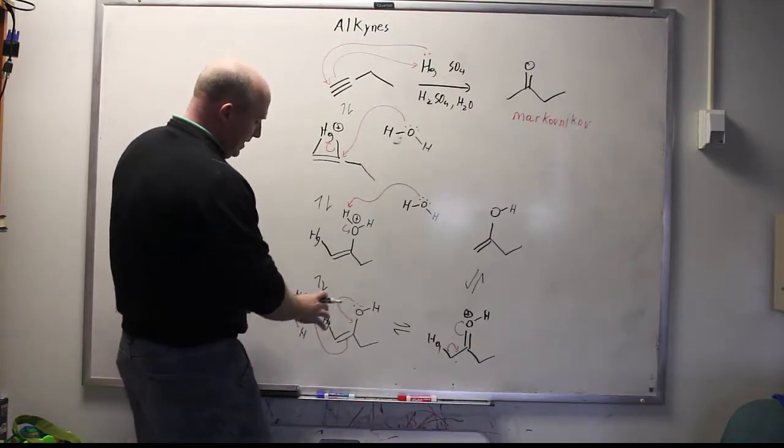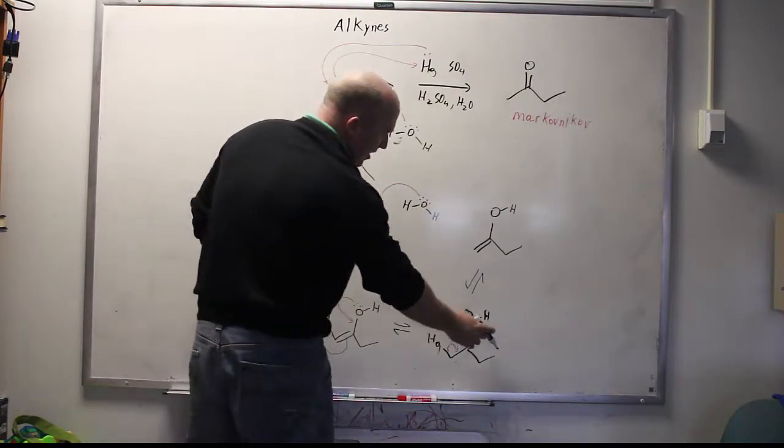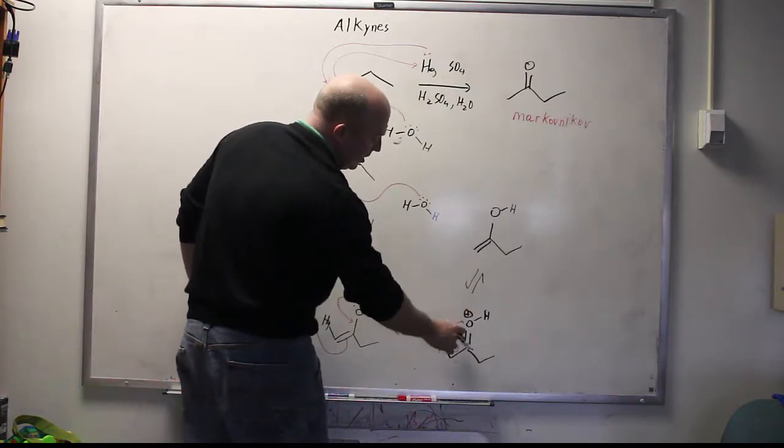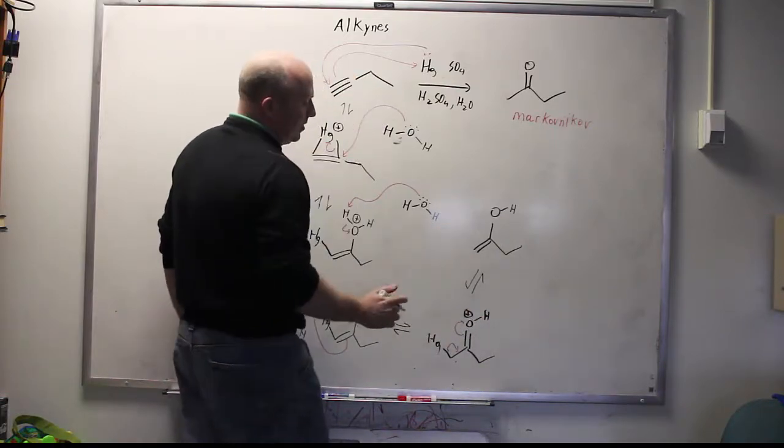So again what has happened is you did a keto-enol tautomerization here and you had a mercury keto species but this was protonated and has a plus on it so when the mercury just plain leaves that then leads to an enol.